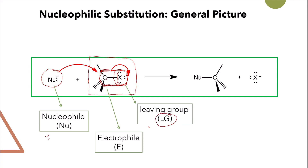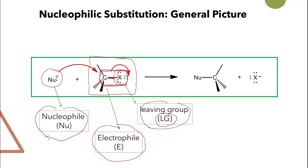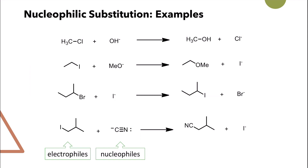The carbon within this bond where the displacement will take place is called an electrophile. So you have an electrophile, a nucleophile, and a leaving group. The product you get here — you will substitute the X with the nucleophile. So this is the product of the reaction.